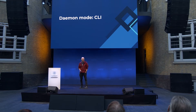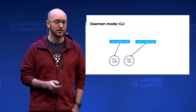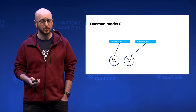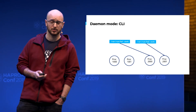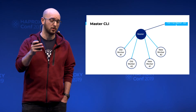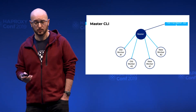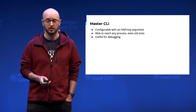There is a new feature called the master CLI. To understand why we made this, we need to understand the flaws in the previous model. Basically, when you had two processes, you needed to have one CLI on each process, which is not really convenient. The problem is that when you reload the processes, the CLI is bound on the new process and you won't be able to access the previous processes. So the master CLI is connected directly to all processes, so you can connect to any process — the new one and the old one. The master CLI is configurable with an HAProxy argument, so you don't need to modify your configuration file.